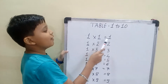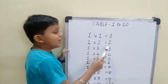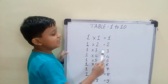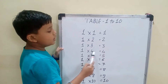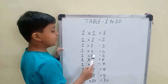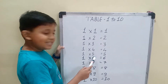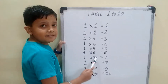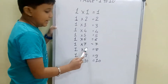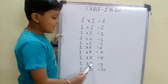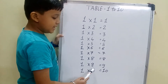1 one is 1, 1 two is 2, 1 three is 3, 1 four is 4, 1 five is 5, 1 six is 6, 1 seven is 7, 1 eight is 8, 1 nine is 9, 1 ten is 10.